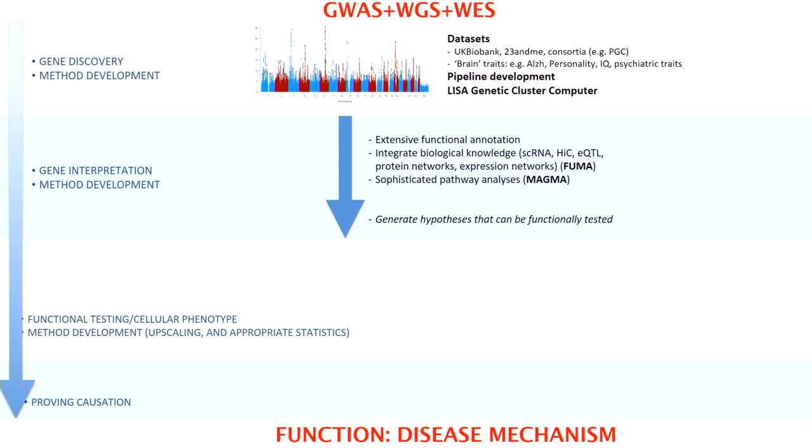After we've run a GWAS, the first phase of extensive functional annotation begins. This used to be simple — you'd have your Manhattan plot, your GWAS results, nice p-values, and you'd look up in a database what a SNP does, what gene is involved, where it's expressed. But it's gotten much more complex. We recently developed a platform called FUMA that collects data from all the different resources. It allows you to upload your GWAS summary statistics and get a huge amount of output to interpret and visualize your GWAS results. FUMA uses MAGMA and other available tools.